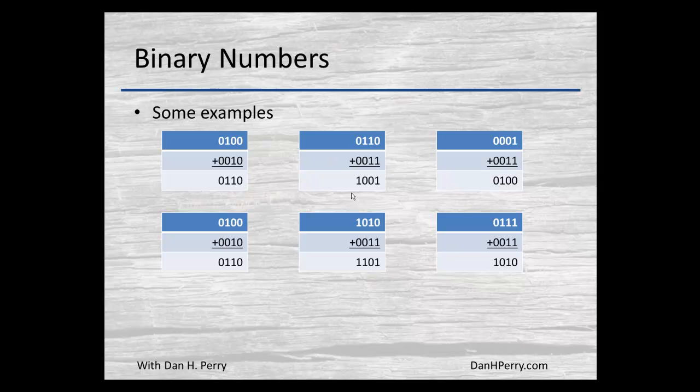Here we've got a 1 0 1 0 adding to a 0 0 1 1. And when we add that, starting at the right most bits, 0 and 1 gives us a 1. A 1 and 1 gives us a 0 with a carry. Well the carry added to the two zeros gives us a 1, and then we've got the 1 in the most significant bit.